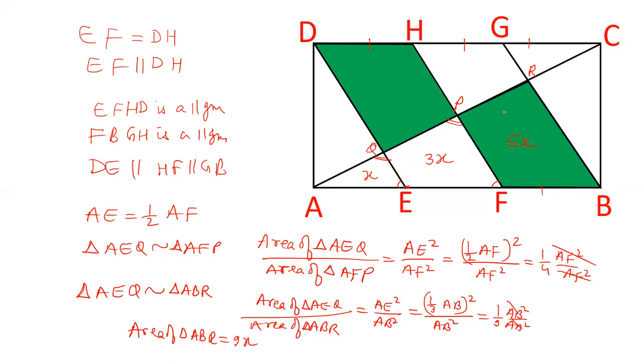Now let's prove that triangle AEQ is equal to CRG. The reason is AE equals GC. Angle QAE equals angle GCR. And angle CGR equals angle AEQ. So these two triangles are congruent.